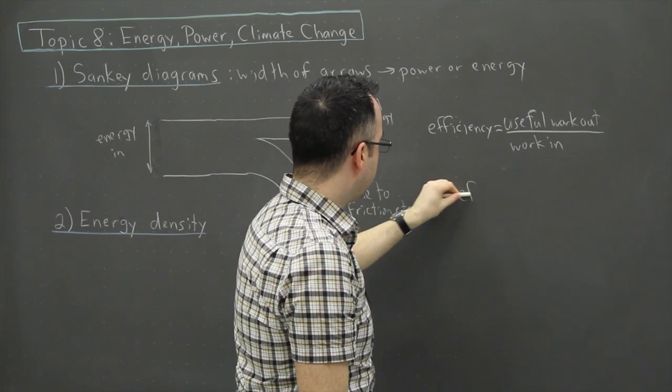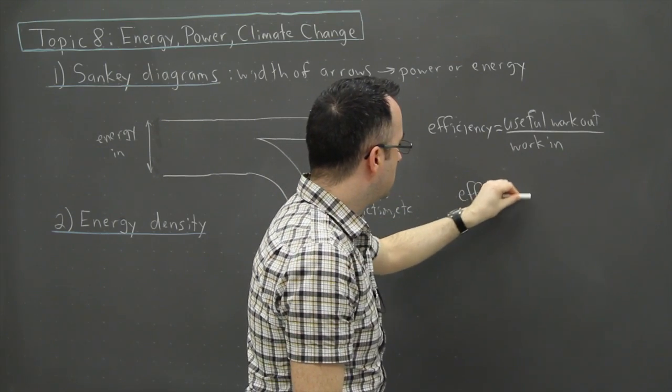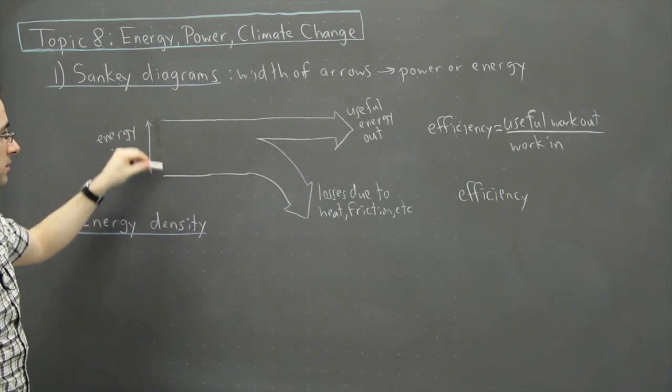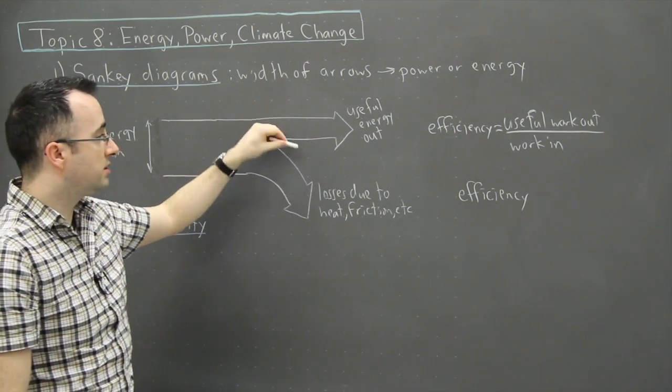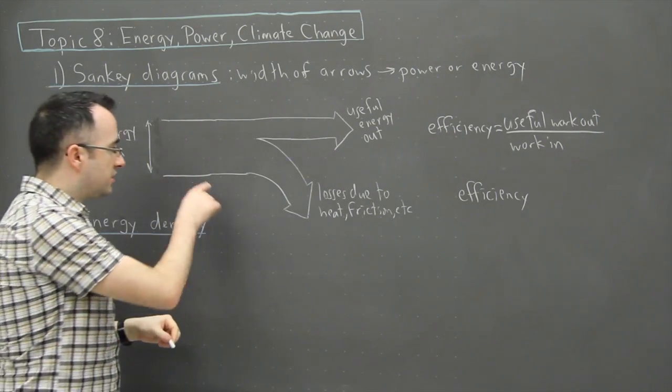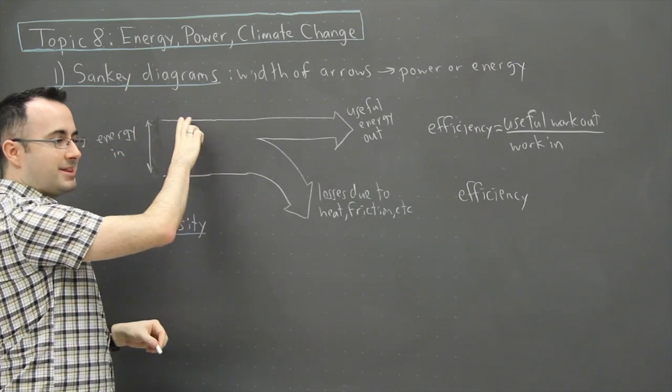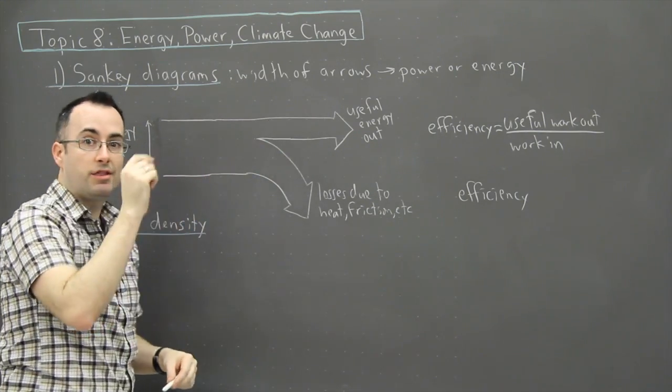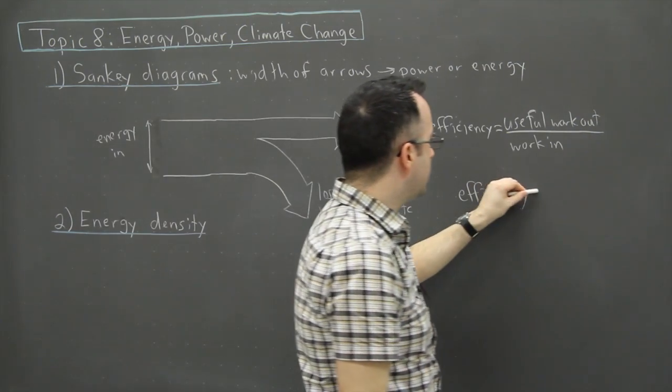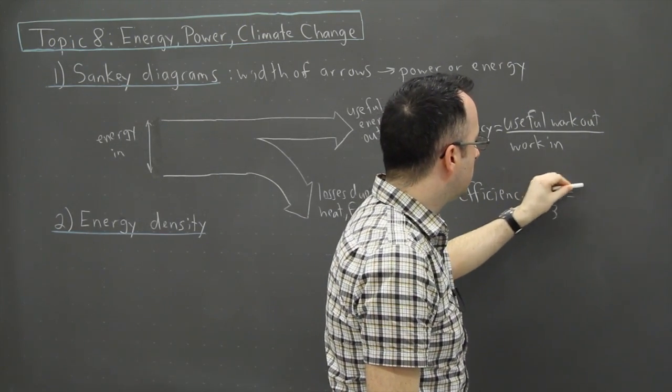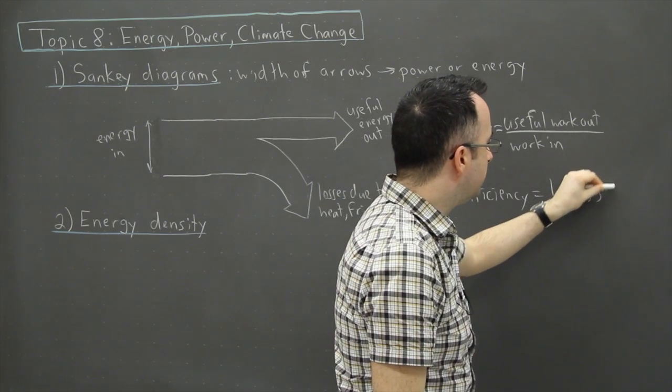So in the case of this one right here then, if I want to actually figure out the efficiency of what I just drew. Let's say this right here is three units tall. And let's say this one right here is only one unit tall. I don't know if you can see, but I've actually drawn it with these little dots that are on the board. I've actually made this three dots thick, and this is only one dot thick. So that means in this case then, it would be one over three, which in this case would be roughly equal to 33% efficient.